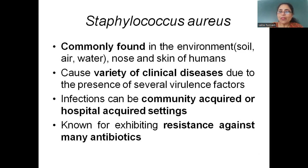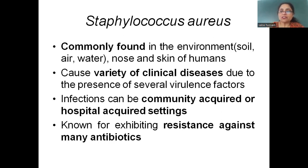Staphylococcus aureus is a commonly found organism. It can be found in the environment such as soil, air, and water. It is also found as a common colonizer in the nostrils, nose, and skin of human beings. It causes a variety of clinical diseases — it is a highly pathogenic organism causing a large number of diseases. It can infect at the community level or can be acquired through nosocomial (hospital-acquired) infections.